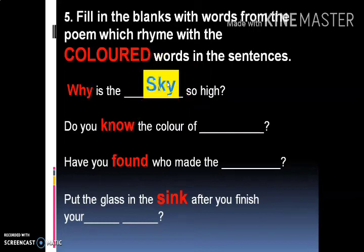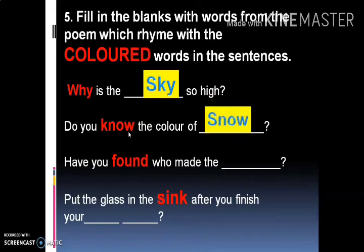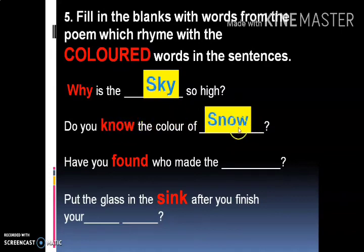'Do you know the color of dash?' — यहाँ पे no का rhyming word fill करना है। No का rhyming word बनेगा snow। Rhyming words वो होते हैं जिनके last letters same होते हैं — no और snow। इसी तरह found का rhyming word बन जाएगा sound: 'Have you found who made the sound?'